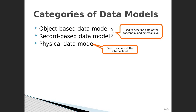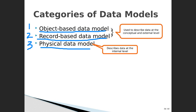There are three categories of data models. Number one: object-based data model. Number two: record-based data model. Number three: physical data model. Object-based and record-based describe the conceptual and external levels, while the physical data model is related to the internal level.